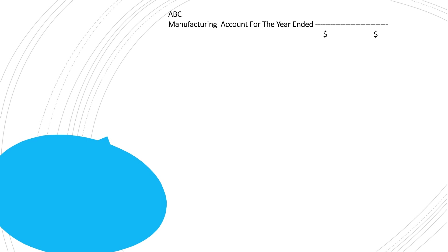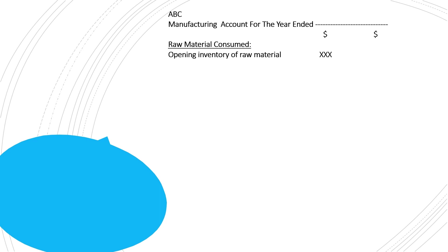The first heading in the manufacturing account will be 'Raw Material Consumed.' We start from direct costs, and in direct costs we write the raw material cost first. Under the heading 'Raw Material Consumed' or 'Cost of Raw Material Consumed,' you write the opening inventory of raw material — that is, the cost of opening inventory of raw material — which will be given in the list of balances or trial balance.